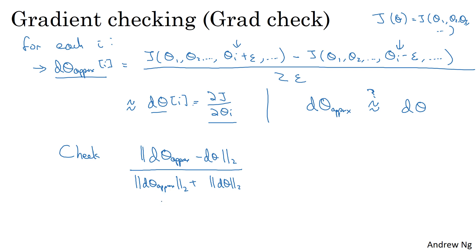And then just to normalize by the lengths of these vectors, divide by D theta approx plus D theta. Just take the Euclidean lengths from these vectors. And the role for the denominator is, just in case any of these vectors are really small or really large, the denominator turns this formula into a ratio.